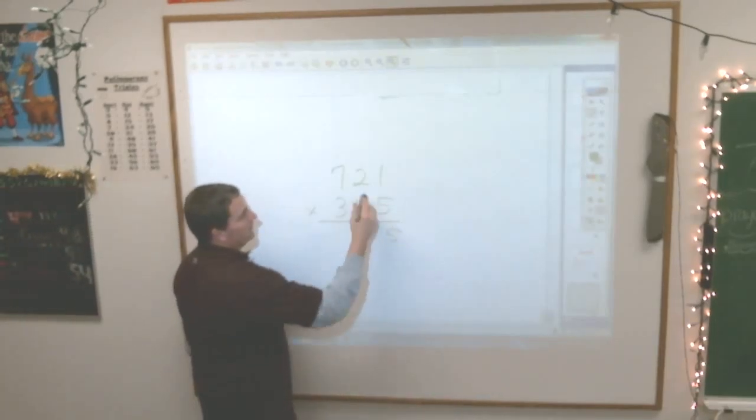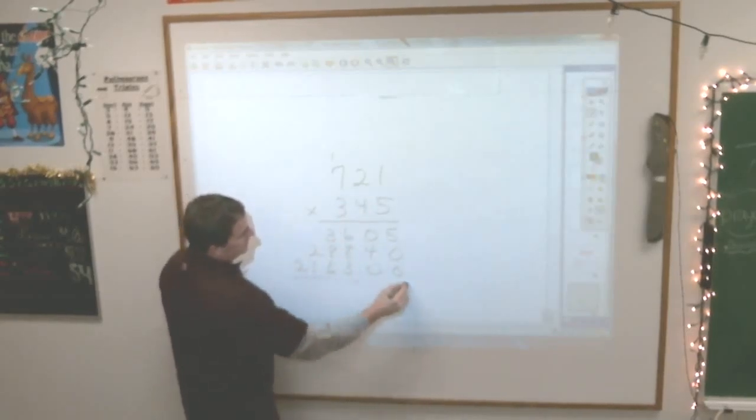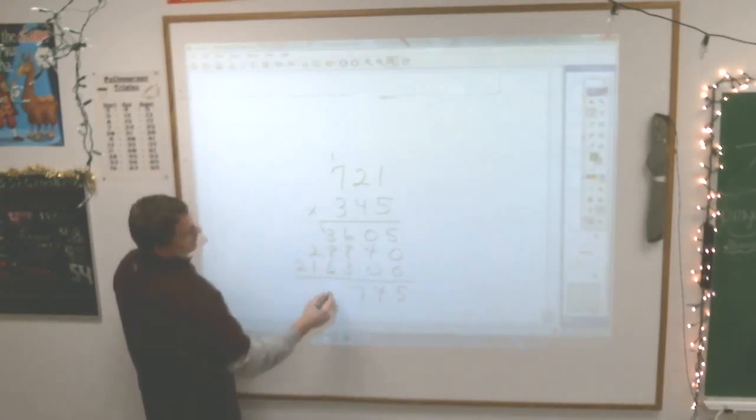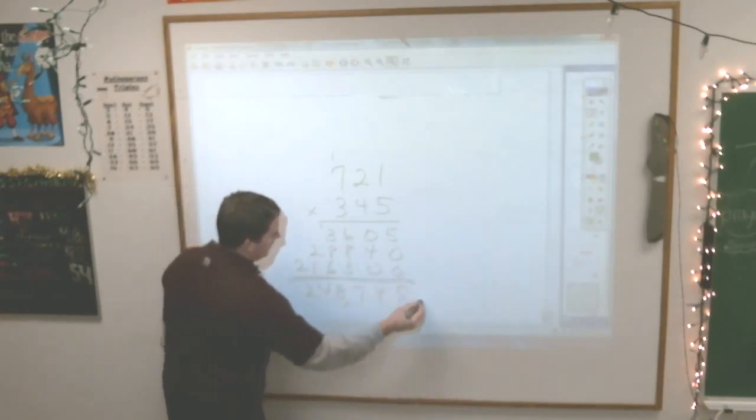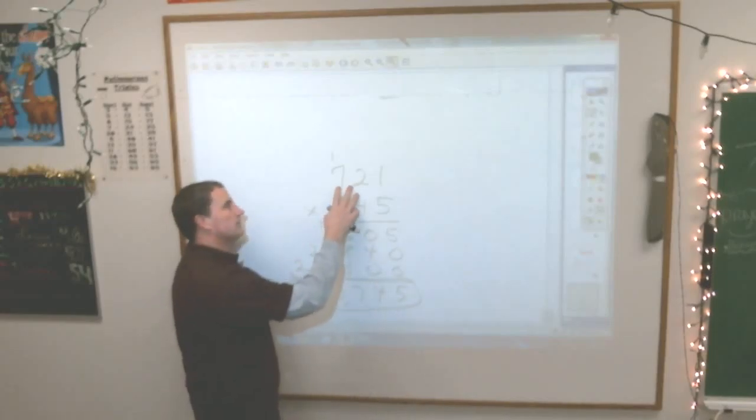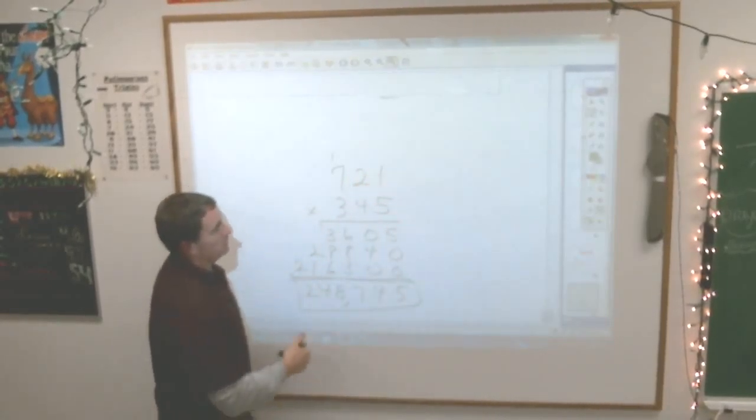If you know your multiplication tables, this problem should take you no more than maybe 30 seconds or so. You know, 5 times 1, 5 times 2 is 10, 36, bring down the 0, 4, 8, 28, put a couple zeros, 3, 6, and 21. And then just add them together. I mean, it should not take you a long time to multiply that out if you know your multiplication tables. But if you have to think what 3 times 7 is or what 3 times 2 is or all that stuff, it's going to take you quite a while.